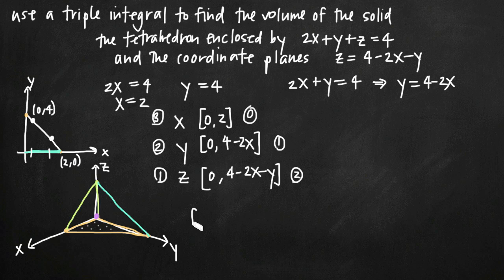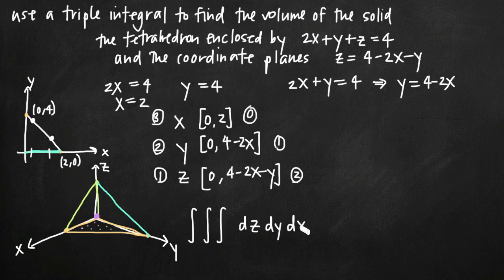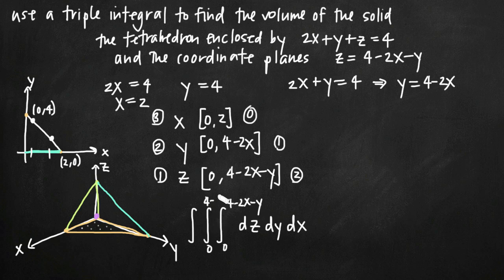Now we set up our integral. The order of integration is z, then y, then x, so we write dz dy dx. Because z is innermost, the innermost integral has limits 0 to 4 minus 2x minus y. Next, y goes from 0 to 4 minus 2x. Finally, x goes from 0 to 2. That's how we set up the iterated integral.